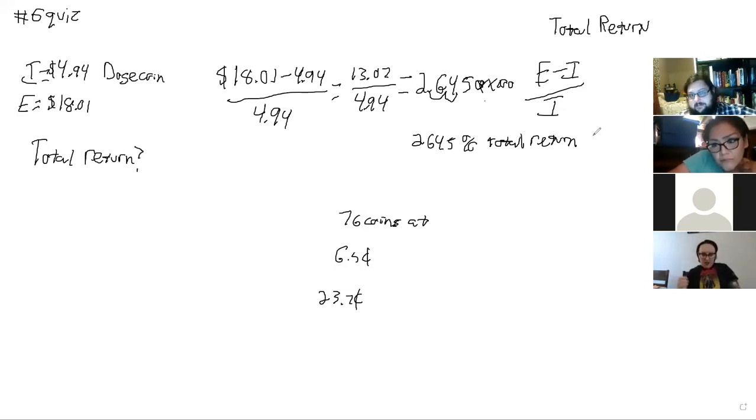You take how much you have at the end, you minus how much you started with, and you divide it by how much you started with. So does that make sense?